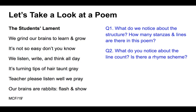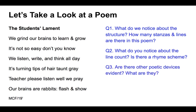We've done a fairly strong analysis of the basic parts of this poem. Now: are there any other poetic devices evident? These are the level-three or more advanced devices — things like similes, metaphors, personification, alliteration, and symbolism. Looking at 'we grind our brains' — are the students actually taking their brains out and grinding them into powder? No — so this is a metaphor, comparing the hard thinking they're doing to the process of grinding wheat or grain into powder.